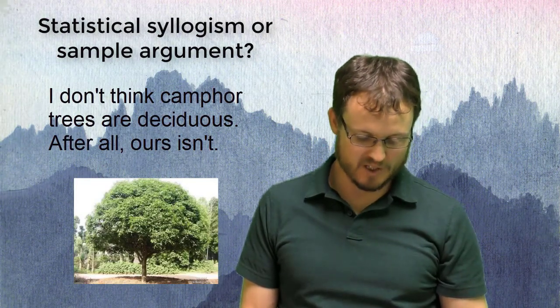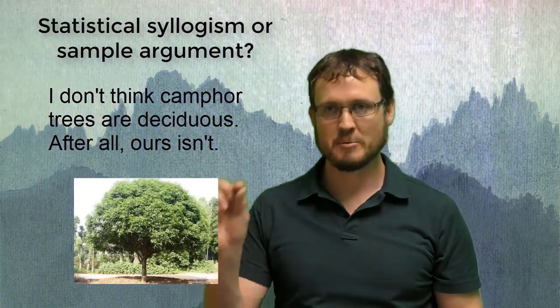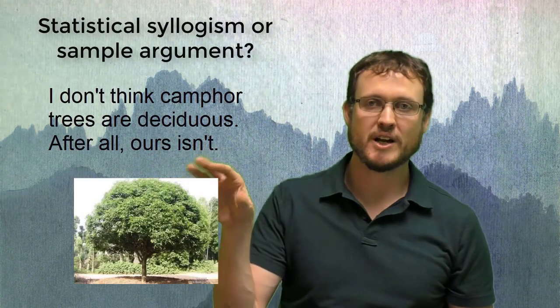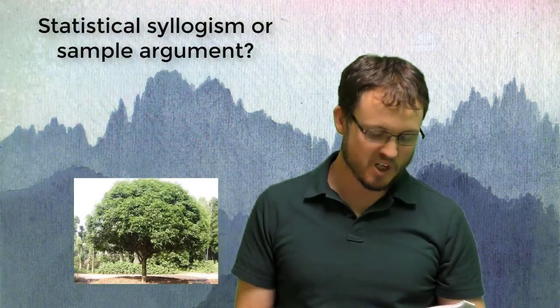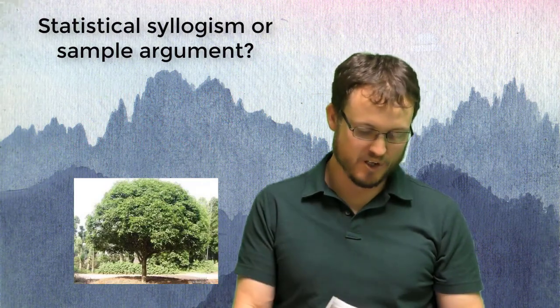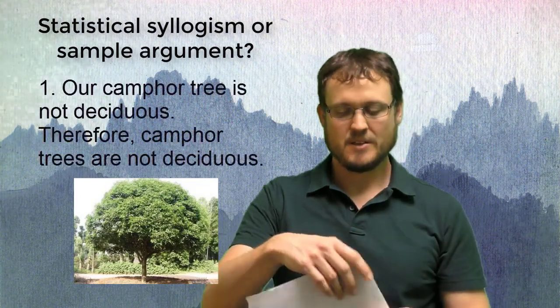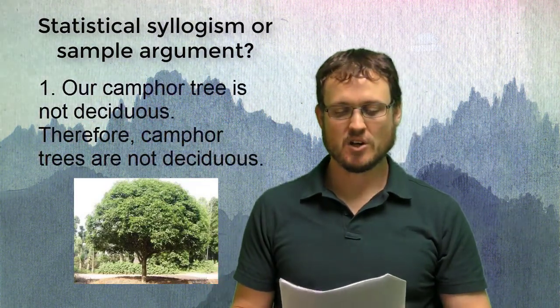So the same thing is happening here. After all, ours isn't. So that the premise would be, and let me just put this up on the screen. I'll write up the argument more formally in premise-conclusion format. The premise of this argument would be, our camphor tree is not deciduous. Therefore, camphor trees are not deciduous.